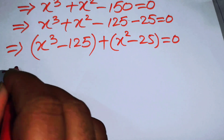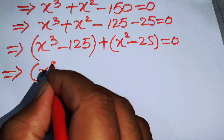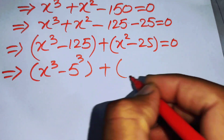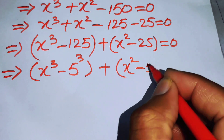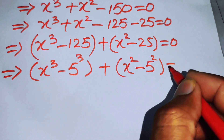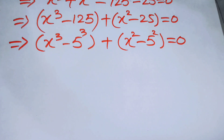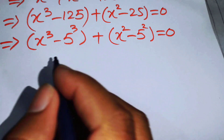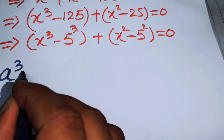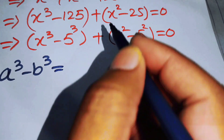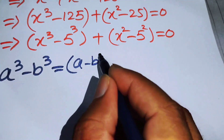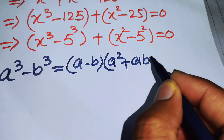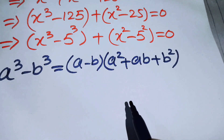After that, we write 125 as 5 cubed and 25 as 5 squared, giving (x cubed minus 5 cubed) plus (x squared minus 5 squared) equals 0. We can now apply two formulas. The first is the cubic difference formula: a cubed minus b cubed equals (a minus b)(a squared plus ab plus b squared).